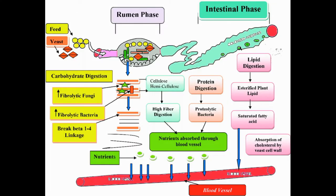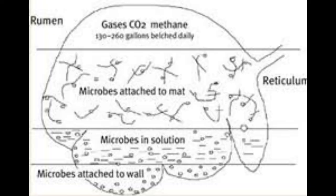Proteolytic bacteria produce protease enzyme, which can break down peptide bonds in protein molecules. Cellulolytic bacteria secrete cellulolytic enzymes that cause the hydrolysis of cellulose and increase the digestibility of feed ingredients. The majority of bacterial species play no important role in digestion and are therefore known as casual passers. In the rumen, bacteria are either in free-floating form or adherent form — amylolytic bacteria dominate in the fluid portion while proteolytic bacteria are found attached to food particles.